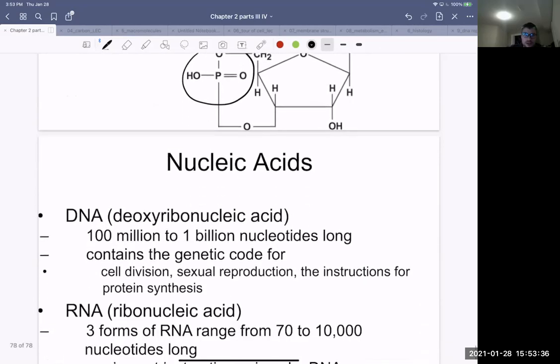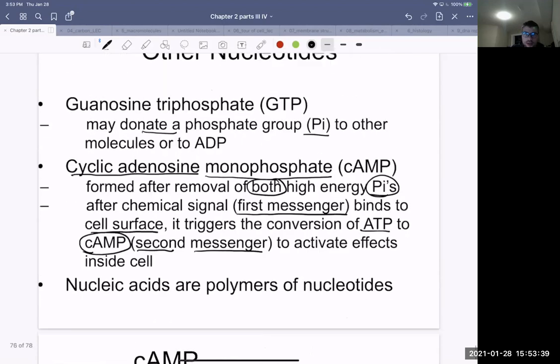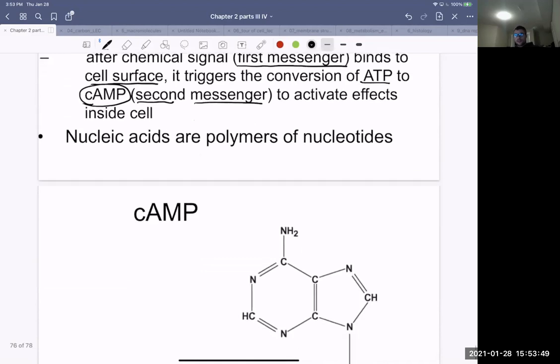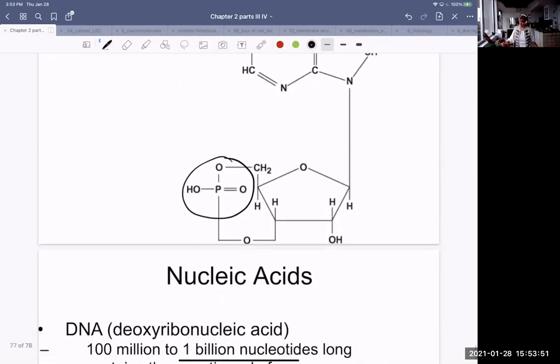This is what cyclic AMP looks like. See, it's just got this one phosphate group. The rest of it looks the same as ATP. Can you scroll up to the previous slide please? Yes, this one. Awesome, thank you.